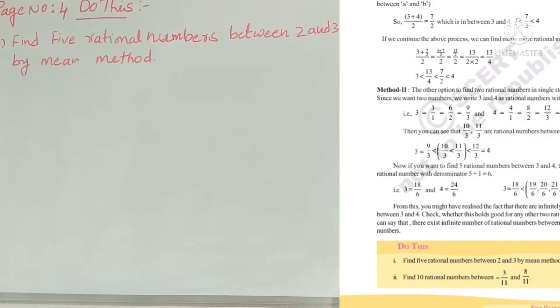Hi students, welcome to my channel. Today we are going to solve a 'Do This' problem in page number 4 of Real Numbers. Here is our problem: find five rational numbers between 2 and 3 by mean method.